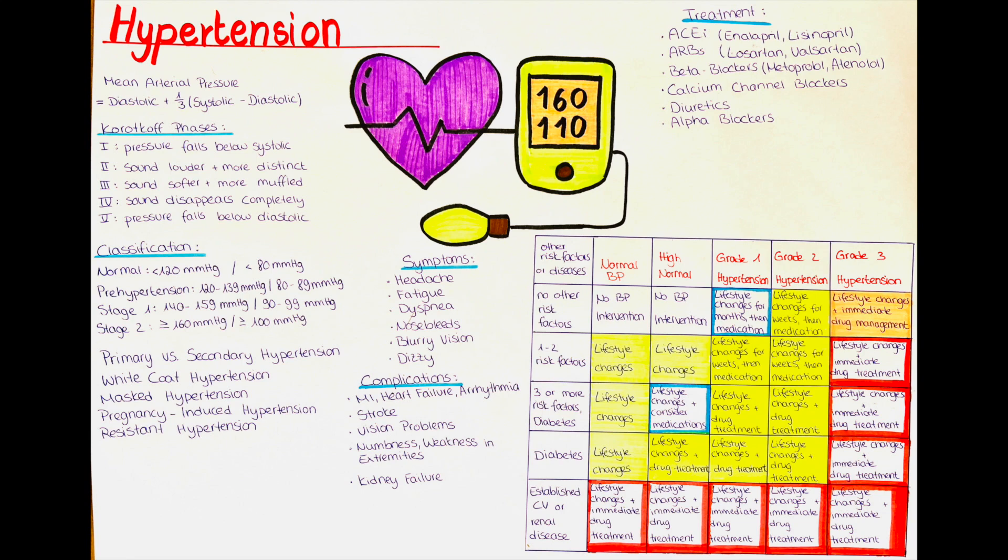In stage two hypertension, the systolic pressure is equal to or above 160 mmHg and the diastolic pressure at or above 100 mmHg.